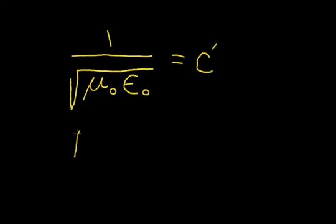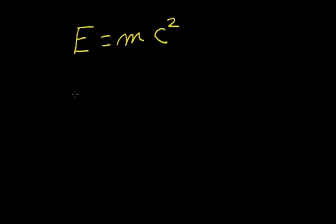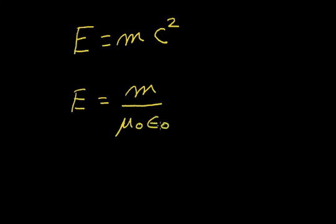Now remember Einstein's famous equation: E equals mass times the speed of light squared — E equals MC squared. If we substitute the speed of light squared in terms of mu zero and epsilon zero, we can rewrite Einstein's famous equation as E equals M divided by mu zero times epsilon zero. So we see that mu and epsilon are very fundamental to the world we live in.